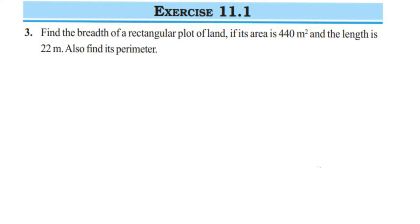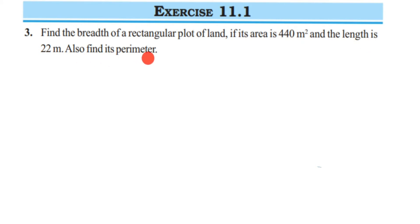Hey everyone, here is a question from perimeter and area — this is Exercise 11.1, third question, class 7 maths. Find the breadth of a rectangular plot of land if its area is 440 meter square and the length is 22 meter. Also find the perimeter. We have been given two things: area and length. We have to find breadth, and then later the perimeter.